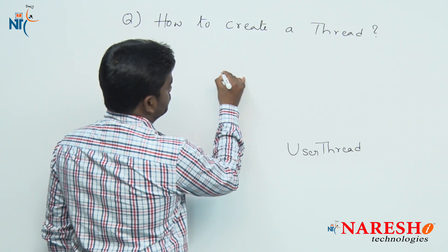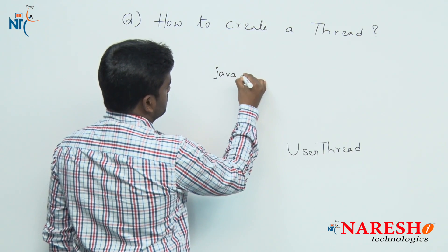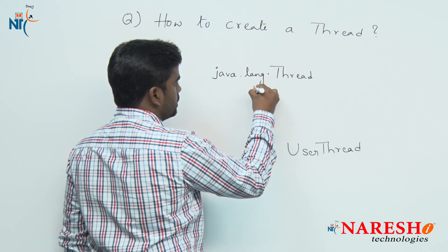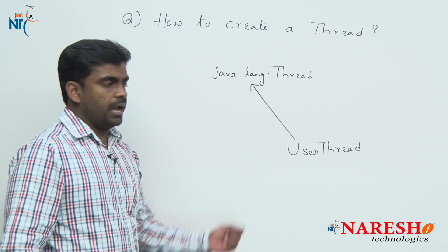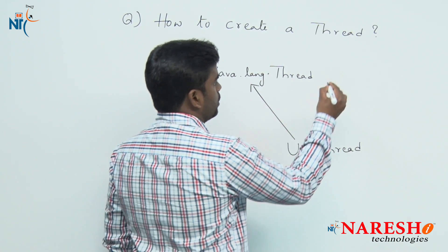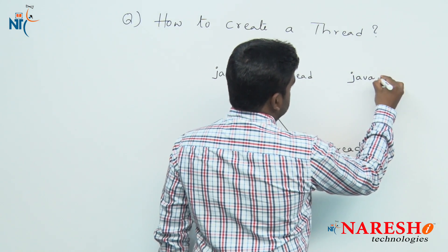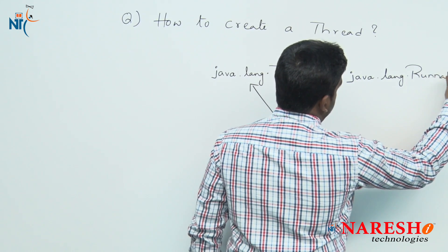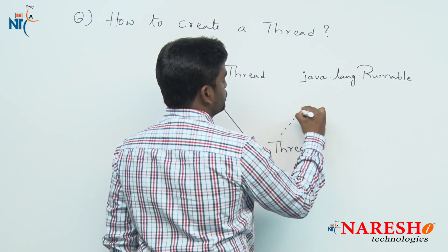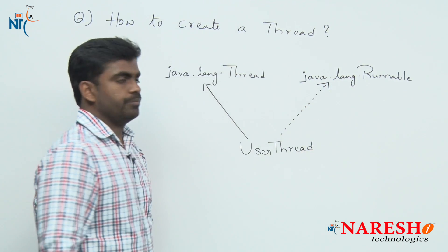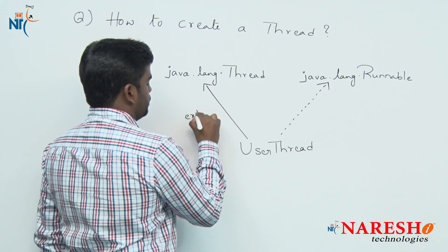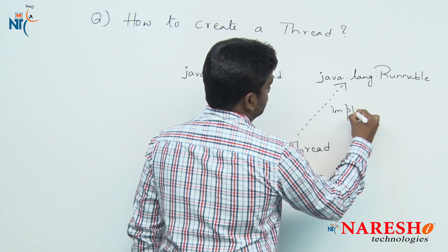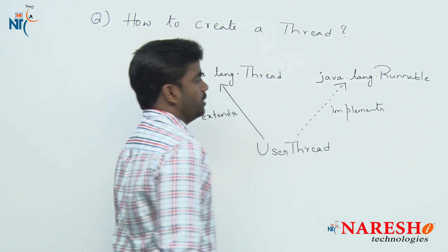Either you need to extend from the Thread class — Thread class is available in the java.lang package, and in UML notation extending is represented by a direct arrow. Or you can implement the Runnable interface — Runnable interface is also available in java.lang package and its UML notation is represented by a dotted arrow. So you have two options.